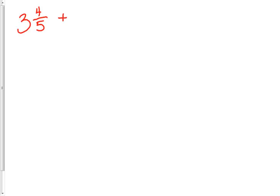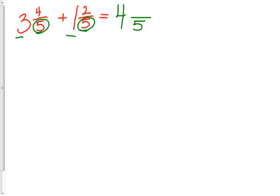First, I want to do one of the problems we did yesterday — when we added and saw that the answer had a mixed number with an improper fraction, and what we had to do to fix that. So let's do the example 3 and 4 fifths plus 1 and 2 fifths. I use my mixed numbers, break them down into whole numbers first: 3 plus 1 is 4. The denominator is 5, that stays the same. Then I add my numerators: 4 plus 2 is 6.